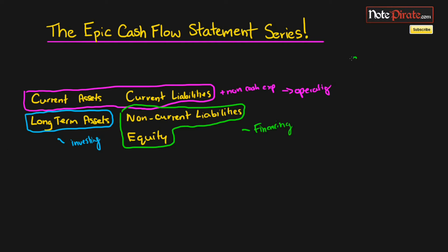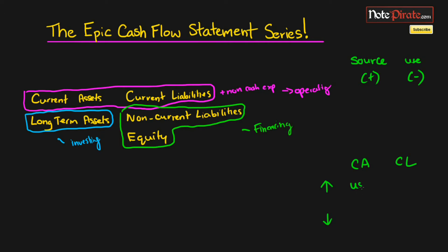Everything on the cash flow statement is going to be a source or a use. A quick rule of thumb: if current assets are increasing in balance, it's going to be a use. If they're going down, it's going to be a source. For current liabilities, if the balance is going up, it's actually going to be the opposite — a source. And if it goes down, it's going to be a use.